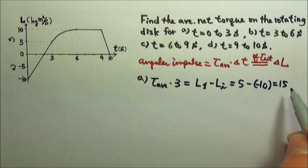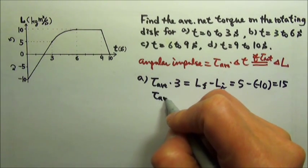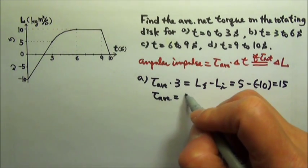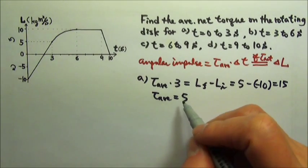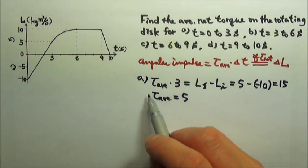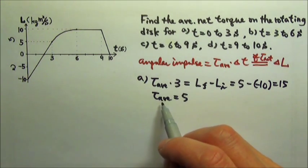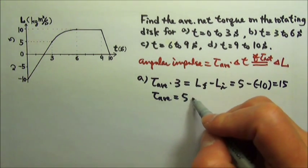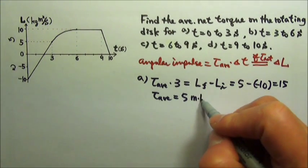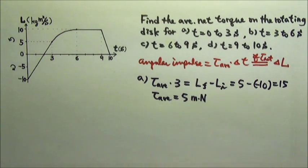And then divide by three on both sides. We get average torque is 15 divided by three, five. And everything is in standard unit. So this torque should also be in standard unit. And since torque is lever arm times force, it's distance times force, so it's meter times newtons.